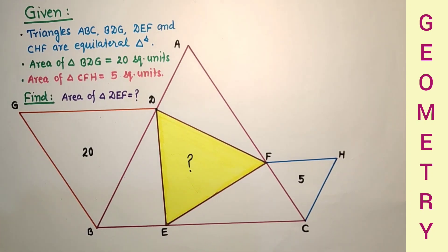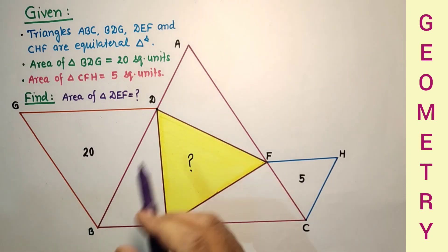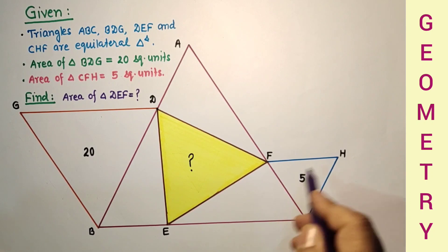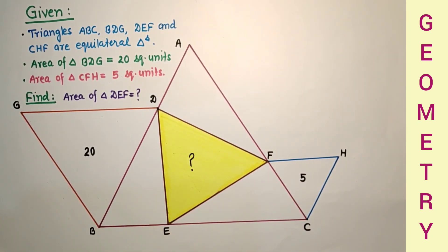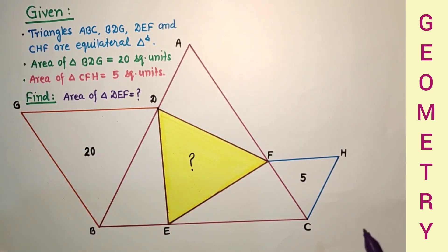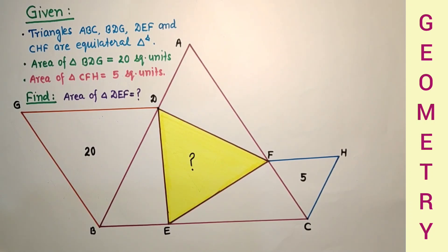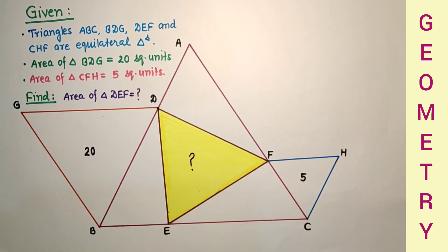In this question, there are 4 equilateral triangles ABC, BDG, CFH and EFD. We are given the area of triangle BDG is 20 square units and area of triangle CFH is 5 square units, and we have to find the area of triangle EFD.